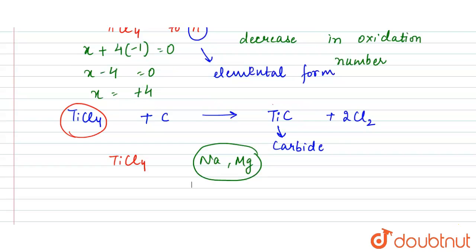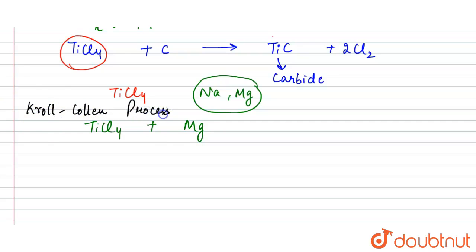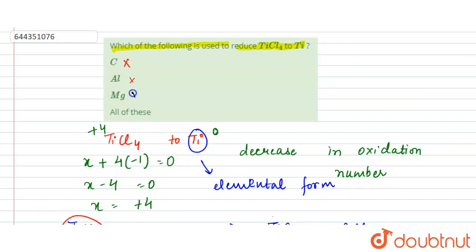TiCl₄ reacts with 2Mg in a process known as the Kroll process. The reaction is: TiCl₄ + 2Mg → Ti + 2MgCl₂. Here, titanium is reduced to its elemental form, and the MgCl₂ produced is separated by distillation.